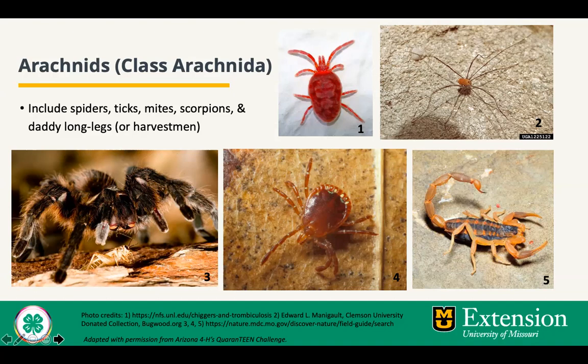Arachnids are not insects, or in the class Insecta. A telltale sign so that you can distinguish between the two is that insects have three pairs of legs for a total of six legs, while arachnids have four pairs of legs for a total of eight. Arachnids include not just spiders, but also ticks, mites, scorpions, and daddy long legs or harvestmen. The first picture is of a trombiculid mite, more commonly known as chiggers. Number two is a daddy long leg or harvestman. Number three is the Missouri tarantula. Number four is a lone star tick, and number five is the striped bark scorpion.